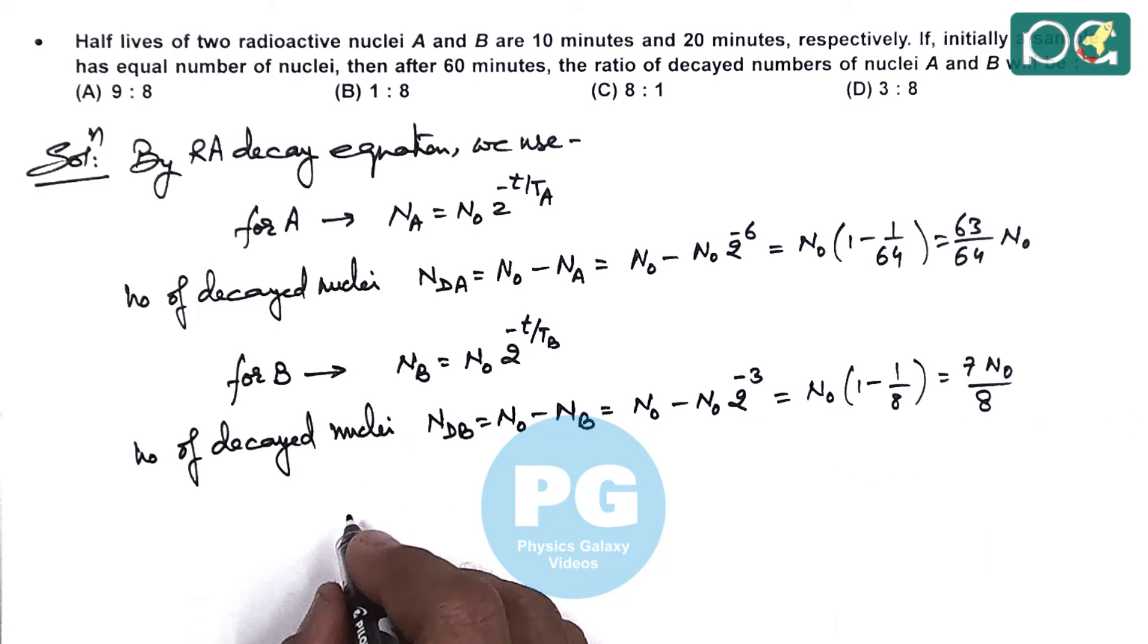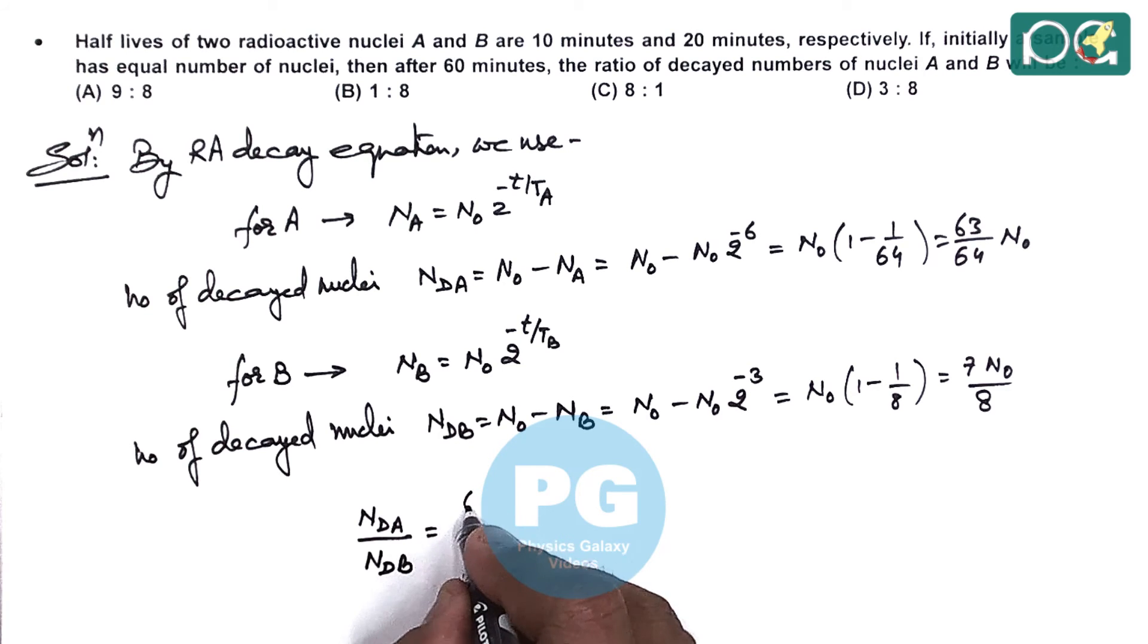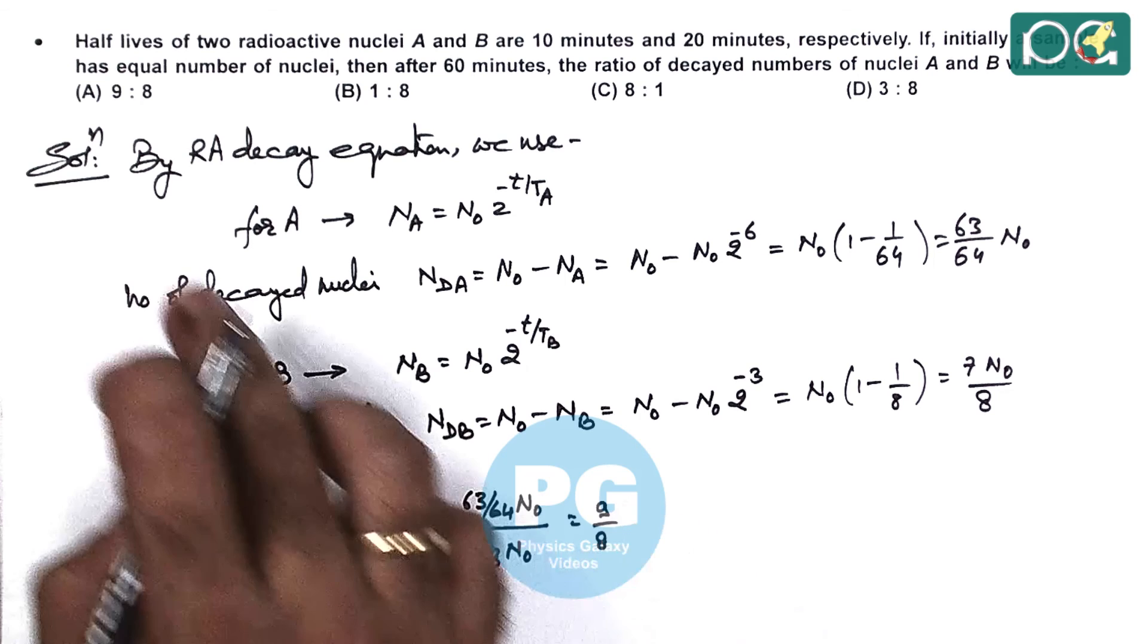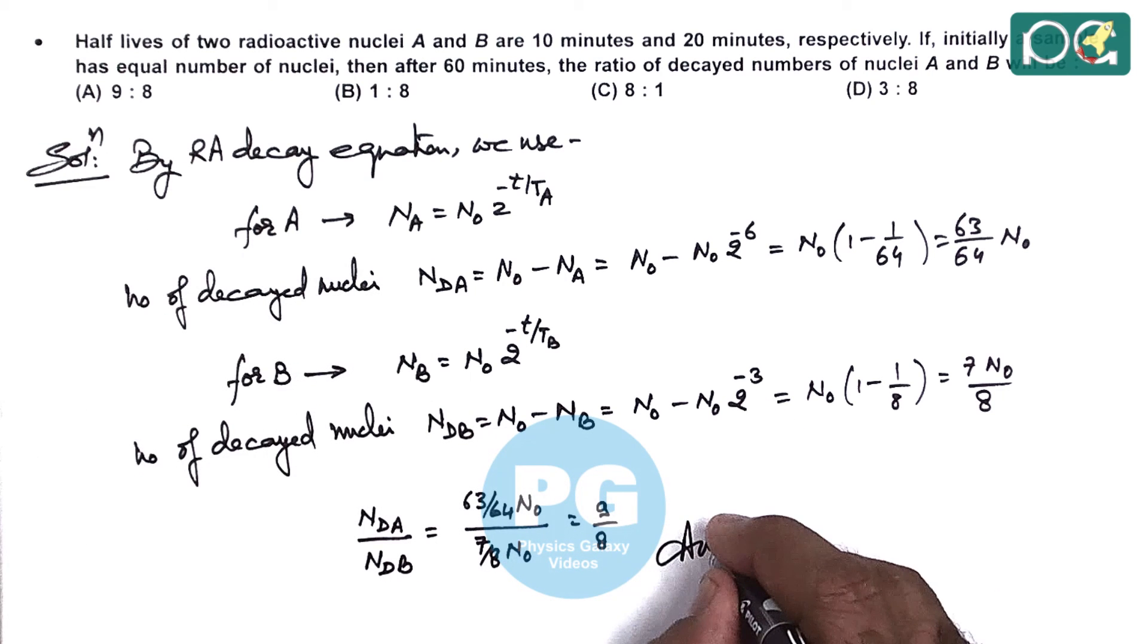So here we are required to calculate the ratio of number of decayed nuclei of A to number of decayed nuclei of B. This gives 63 by 64 N0 divided by 7 by 8 N0, which gives 9 by 8. So the ratio matches with option A in the given question.